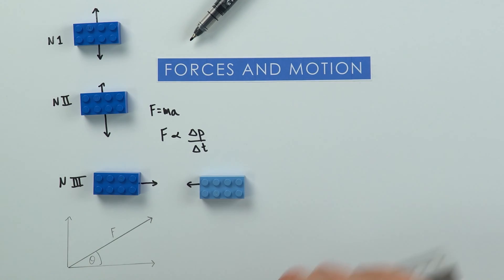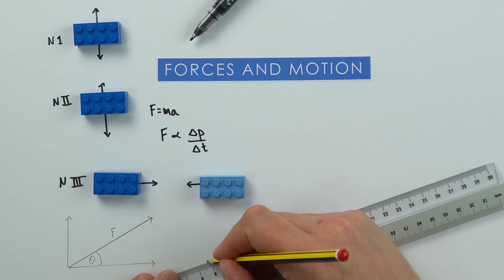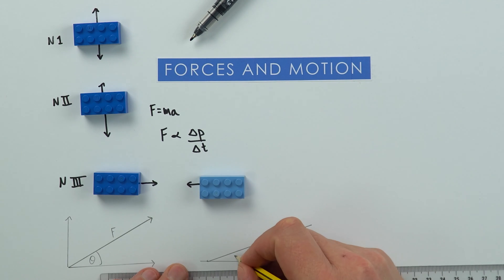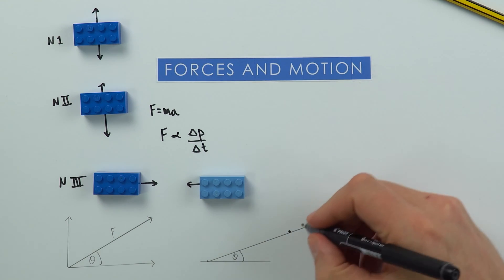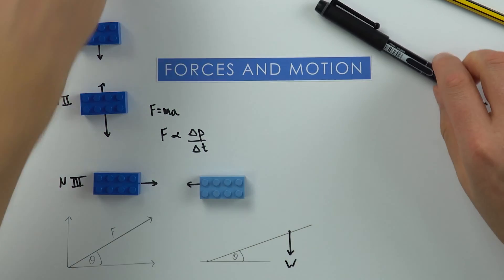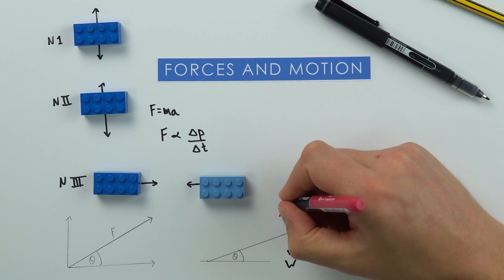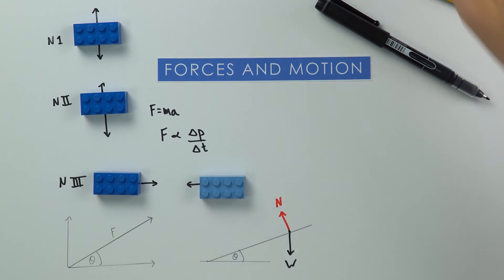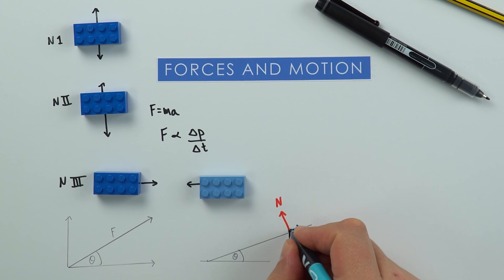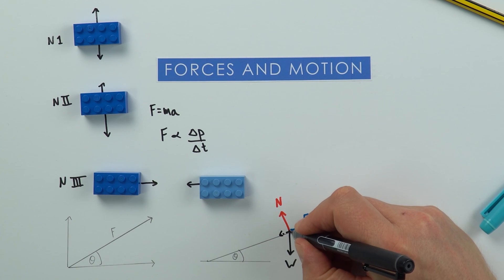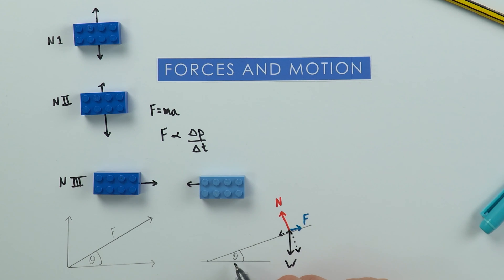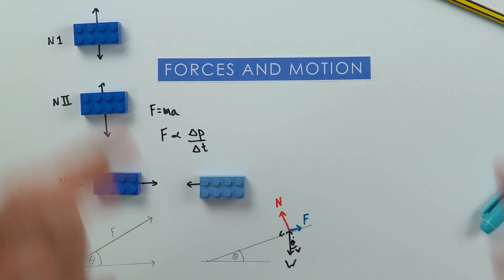Drawing a quick diagram: if the slope makes an angle theta above the horizontal, the weight W acts downward, the normal contact force N acts perpendicular to the slope, and friction F acts up the slope. We can resolve the weight into its component acting down the slope and its component acting at 90 degrees to the slope. If that angle is theta, the relevant angle in the triangle is also theta. This is why a good understanding of trigonometry is essential, as it permeates many other topics.